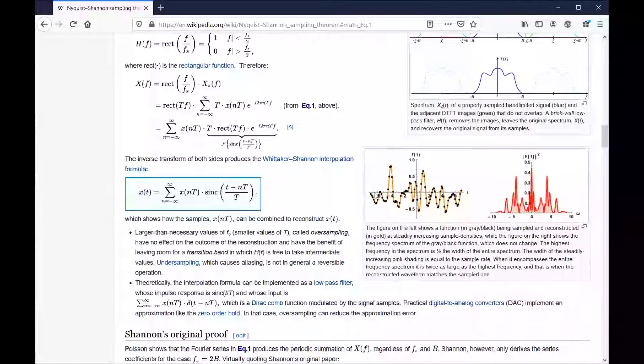Poisson shows that the Fourier series in equation 1 produces the periodic summation of x of f regardless of f sub s. Okay. Well, we already have a problem. The article refers to equation one. So I must have missed something. Whatever shall we do? Let's press tab and activate the equation one link and see what equation one was.